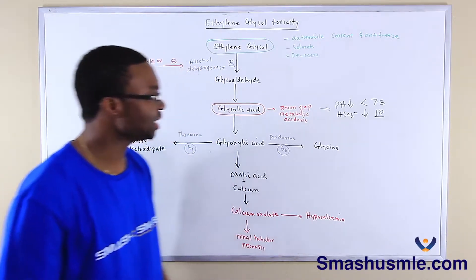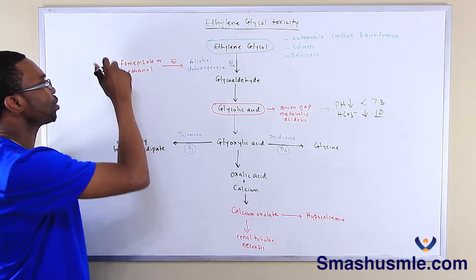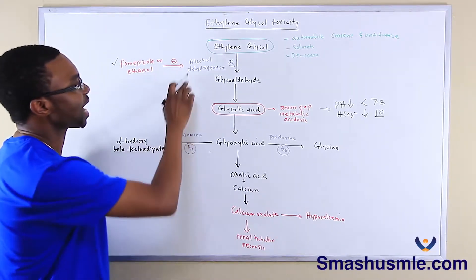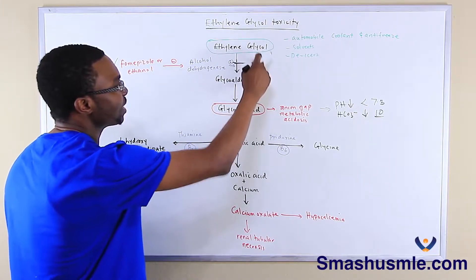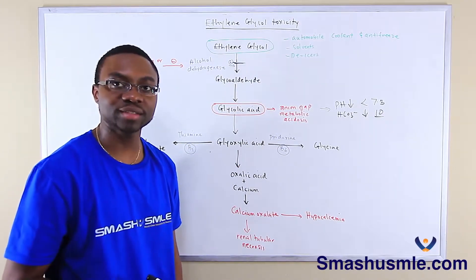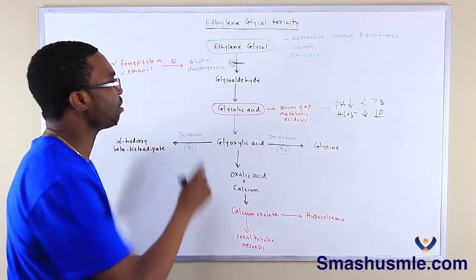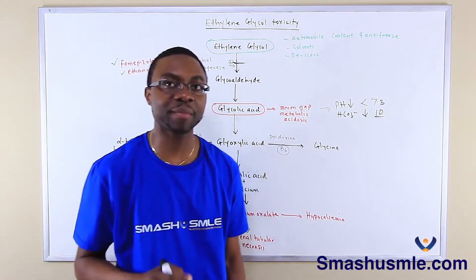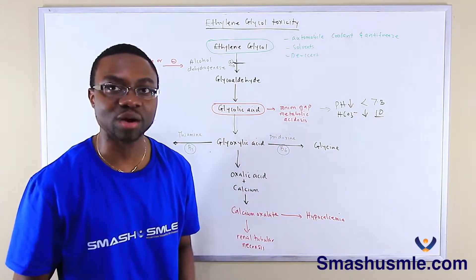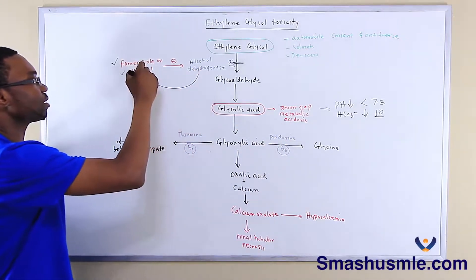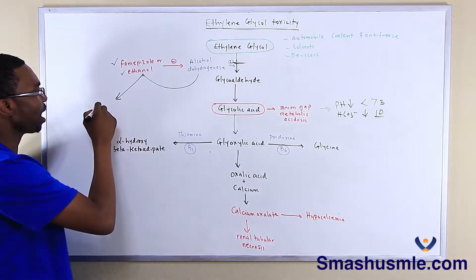So they have anion gap metabolic acidosis, hypocalcemia, and renal tubular necrosis. In order to treat this patient, you have to give them an antidote known as fomepizole. Fomepizole is an alcohol dehydrogenase inhibitor — it blocks this pathway and prevents the breakdown of ethylene glycol into its toxic byproducts. Also, if you don't have fomepizole, you can treat the patient with ethanol, because ethanol is going to compete for that alcohol dehydrogenase.